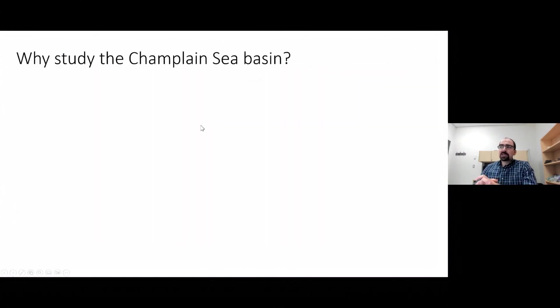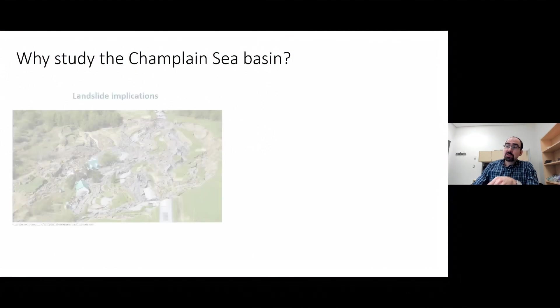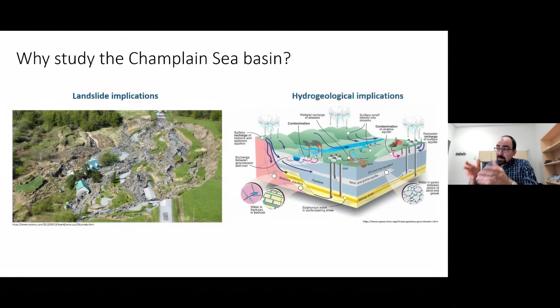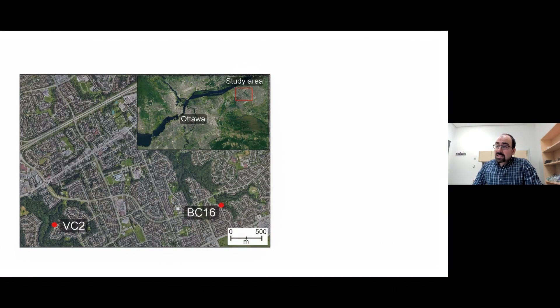The rationale for studying the Champlain Sea Basin is driven both by great societal interest due to the potential susceptibility of these sediments to retrograde landsliding. As well, these sediments in the Ottawa and St. Lawrence River Valley serve as a regionally extensive aquitard, so their integrity is also of great interest. This map in East Ottawa shows the distribution of two boreholes, VC2 and BC16.